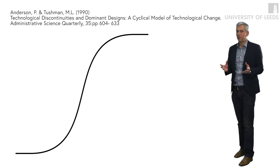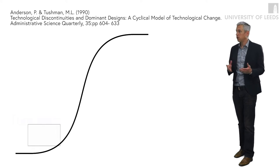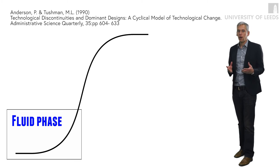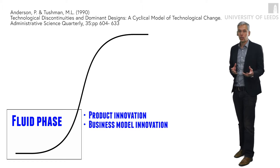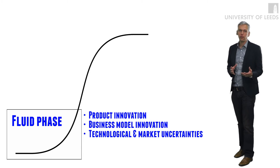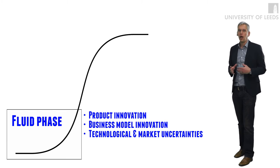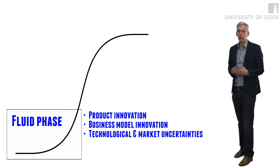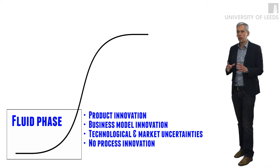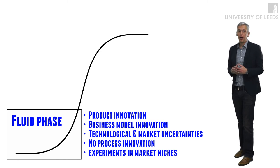The dynamics of the process can be described as an S-curve. An S-curve starts with the fluid phase. In the fluid phase we usually have a lot of new product innovation, maybe a lot of new business model innovation, and this innovation is at this phase characterized by a high degree of technological uncertainty — because technology might not be that clear — or also market uncertainty, because it might not be clear who is going to buy this product or whether the market is right. At this stage we usually don't see so much process innovation. Companies will very often experiment within some market niches, and this is where disruptive innovation starts, with these fluid phases.